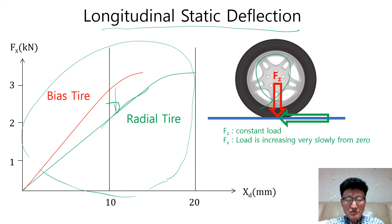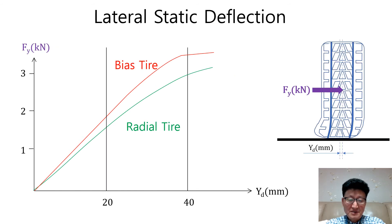In the longitudinal direction, radial tire has lower stiffness of structure between tread and bead wire. The same thing happens in the lateral loading.